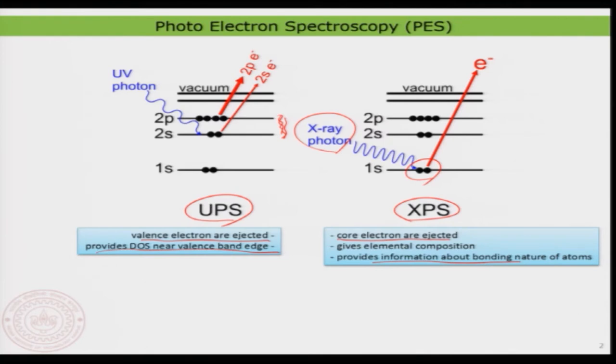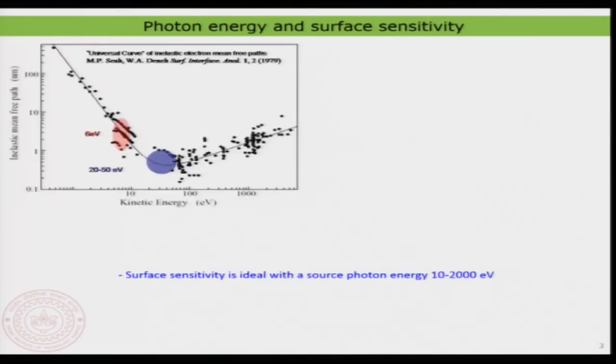Now let us look at UPS first in greater detail and then we can understand XPS, because both have different applications. Before we go into that, I also want to tell you that both XPS and UPS are quite surface sensitive. This is the interesting aspect about it and that is why this is a technique widely used by surface scientists or people who work in surfaces, interfaces and so on. This can be understood using the so-called universal curve.